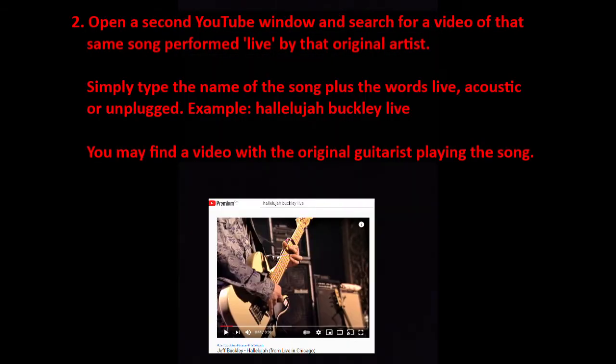Step 2. Open a second YouTube window and search for a video of that same song performed live by the original artist. Simply type the name of the song plus the words live, acoustic, or unplugged. For example, Hallelujah Buckley live.